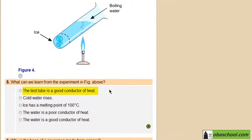The test tube is a good conductor of heat. Cold water rises. Ice has a melting point of 100 degrees Celsius. The water is a poor conductor of heat or the water is a good conductor of heat.